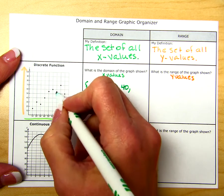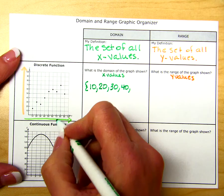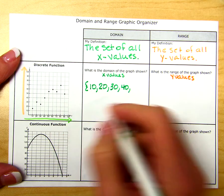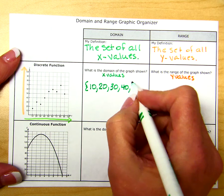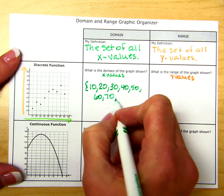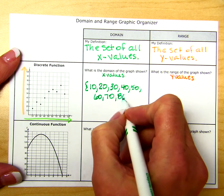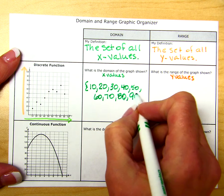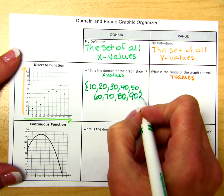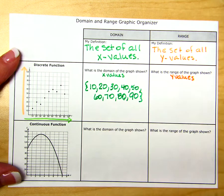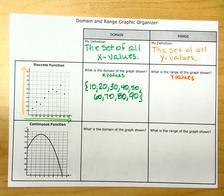Then 60, 70, 80, and 90. Remember to signify a set by putting braces at both the beginning and the end.